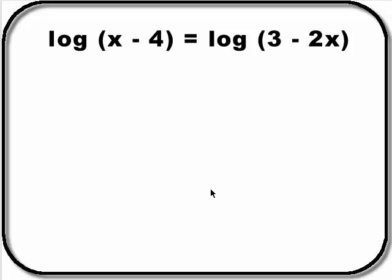Log of x minus 4 equals log of 3 minus 2x. Oh my goodness gracious. Alright, first step is to move one log to the other log by adding the opposite to both sides.